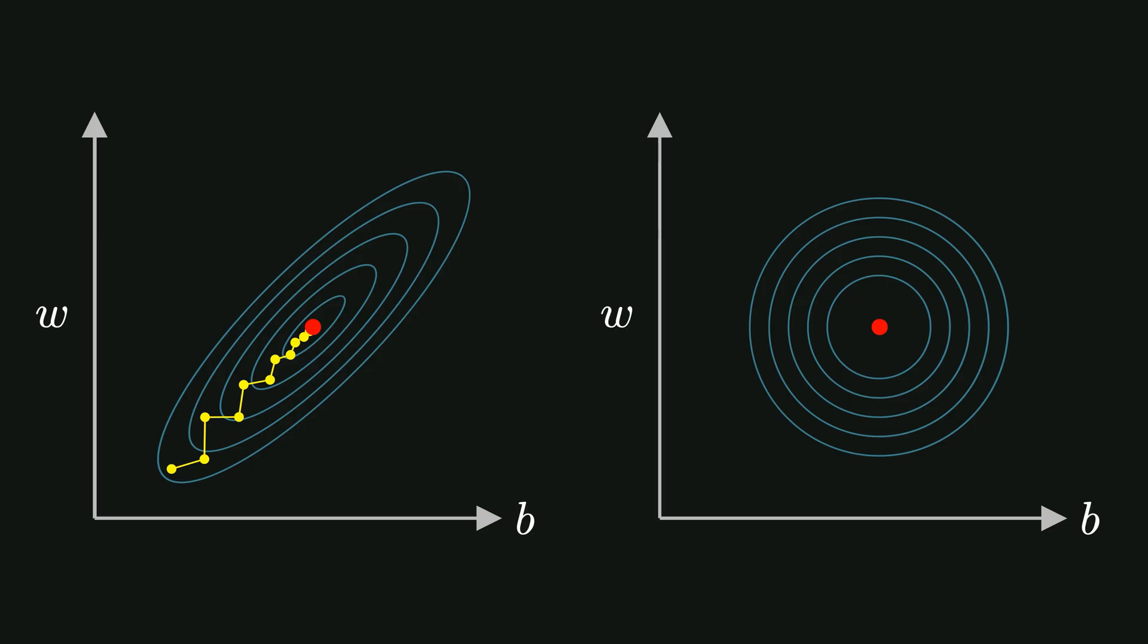On the right, after normalization, the data becomes more symmetrical and balanced. This allows gradient descent, or any other optimization algorithm, to converge faster and more reliably, because all features contribute more evenly to the updates. In short, normalizing makes optimization more efficient, stable and predictable.